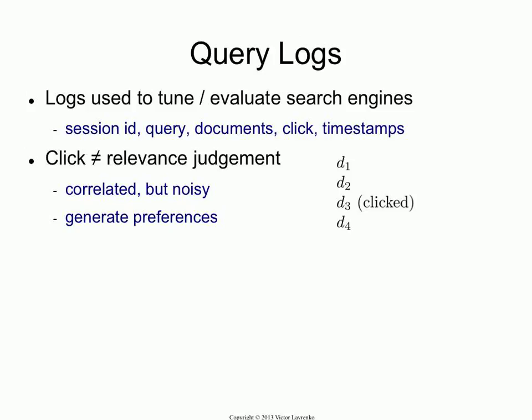Last time we left off talking about query logs and how we can turn clicks into preferences. If a search engine gives us a ranking and the user clicks on the third document, that produces a set of preferences. The user prefers document 3 to documents 1 and 2, and also prefers it to document 4 and all subsequent documents. What you want to do with preferences is either convert them to something that looks like relevance judgments, or build evaluation metrics directly off of preferences.